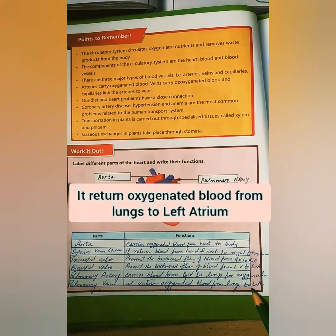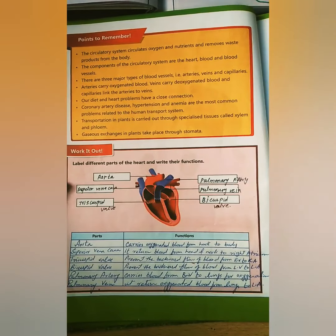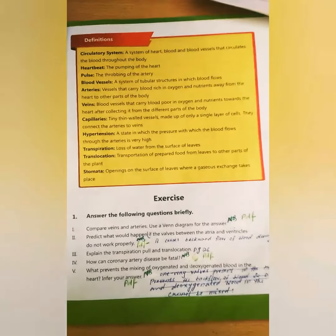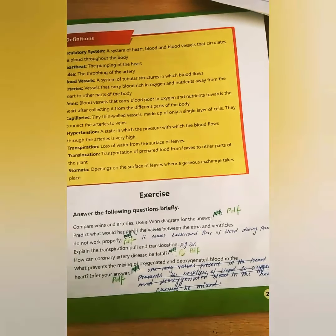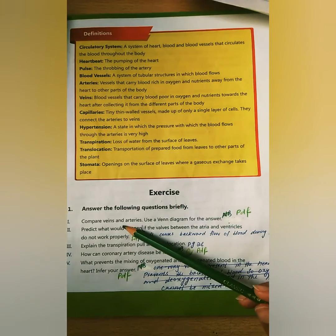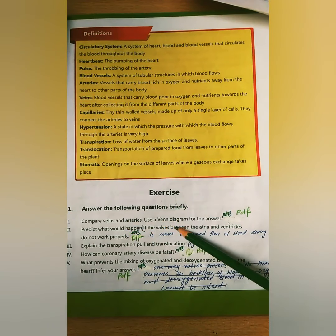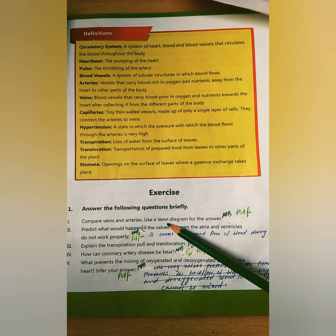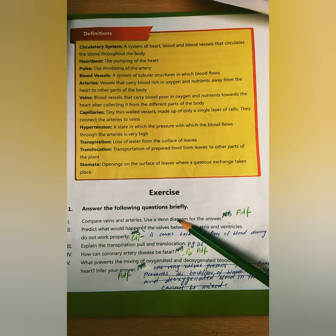Now turn to page number 29, where the chapter exercises begin with short question answers. The first question asks you to compare veins and arteries using a Venn diagram. A Venn diagram is similar to what you have done in mathematics — two overlapping circles.